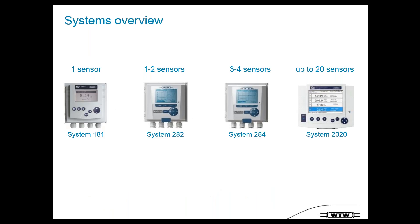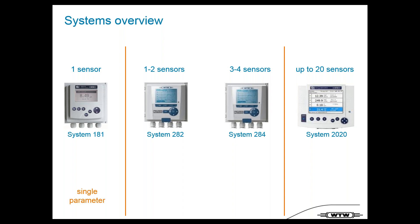From the IQ systems we have different kinds of systems, so you can customize to local needs. We have a system for one sensor, systems for up to four sensors, and up to 20 sensors. So we have a single-parameter solution, a single-measuring-point solution for one to four sensors, and a system for up to 20 sensors to realize a full network.